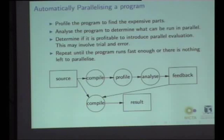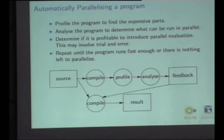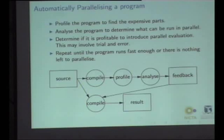Look at where the expensive code is, and try to find code that's also expensive within that. Then determine if that code is independent and can be parallelized against other expensive code. Then actually annotate the program. In Mercury, we use an annotation like the one we saw in Steven's slide - it's a little ampersand, and we'll see that shortly.